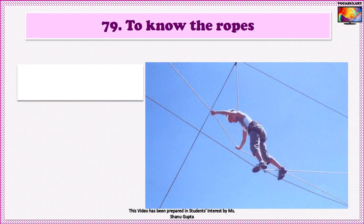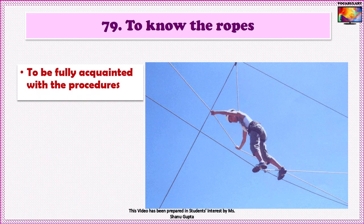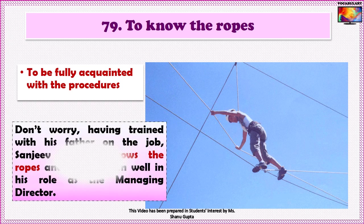The next idiom is 'To know the ropes.' The expression is an 18th century idiom which alludes to sailors learning the rigging so as to handle a sailing vessel's ropes. So if someone knows the ropes, he is fully informed about the details of a situation or task — that is, he is acquainted with the procedures. An example: 'Don't worry — having trained with his father on the job, Sanjeev already knows the ropes and will perform well in his role as the managing director.'